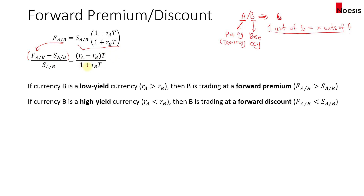We multiply by T over (1 plus R_B times the tenor). Focusing on the base currency: if currency B, the base currency, is a low yield currency relative to A — meaning the interest rate for B is less than the interest rate for A — so for example, B is 3% and A is 5%, then the forward rate will be greater than the spot rate. So currency B is said to trade at a forward premium.